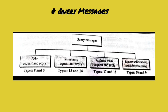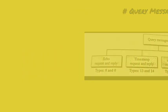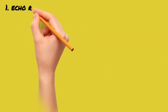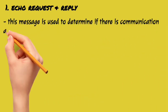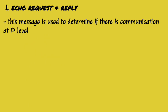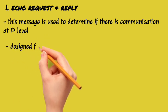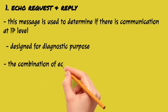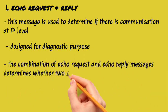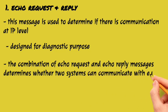We also have query messages, and there are 4 types. These are in request-and-reply pairs. The first is the echo request and echo reply message. This message is used to determine whether communication is possible at the IP level. It is for diagnostic purposes, and the combination of echo request and echo reply determines what system is prepared to communicate.